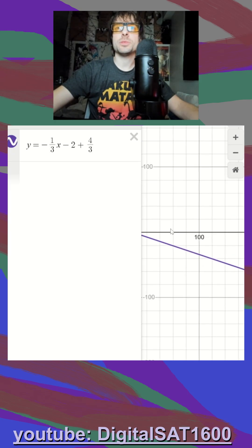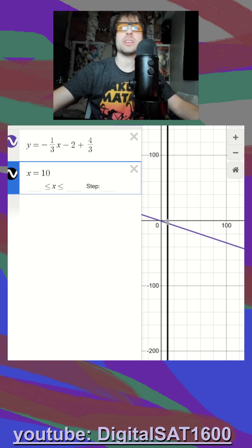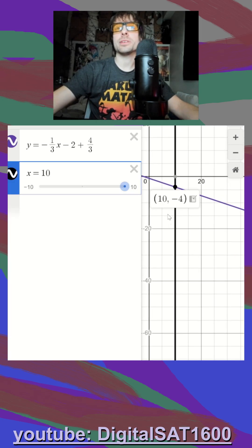And then all I have to do is say, okay, well, what happens when our x is equal to 10? I should see a nice intersection point here. And that value is going to be when x is 10, my y is negative 4.